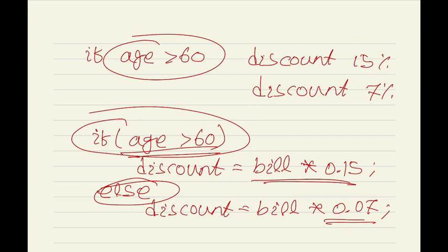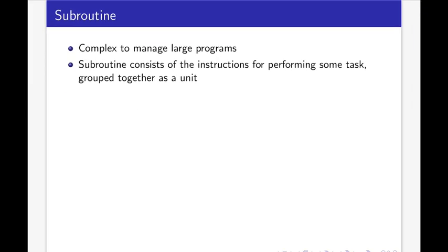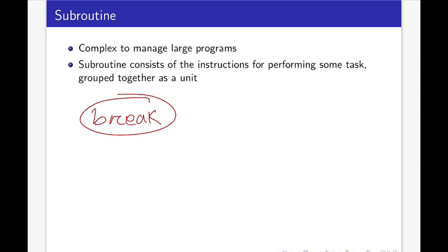Here the condition is checked whether age is greater than 60 or not, and depending on that the course of action is decided. Now we will move to subroutines. Large and complex programs are difficult to write. Subroutines provide a solution to manage such large programs by breaking them into small parts. A subroutine consists of the instructions for performing some task, grouped together as a unit and given a name.